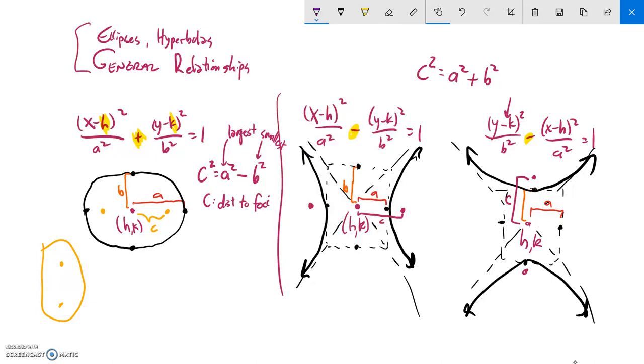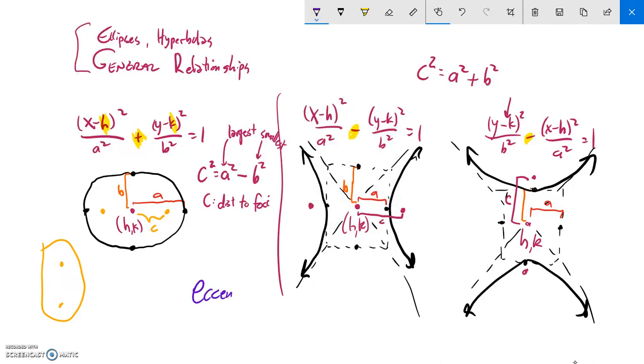So last piece, then, is the eccentricity of these. Now, we usually just call it c over a, but it's a little arbitrary which one's a. So in the ellipse, it's c over the larger one, whatever direction this is going.